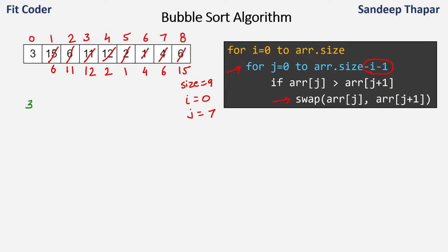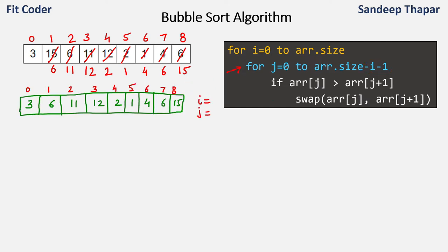So we have 3, 6, 11, 12, 2, 1, 4, 6, and 15. Now in the next iteration i becomes equal to 1, and we run the inner for loop from j equal to 0 to array size (9) minus i (1) minus 1, so we run it till index 7. We removed the last index (array[8]) from this inner loop because we have already placed the highest element 15 at the correct position, so we do not need to consider 15 again. That is why we reduce the inner loop by i minus 1.